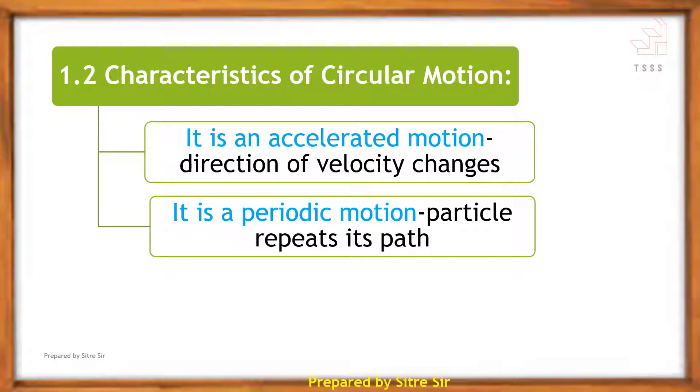Characteristics of circular motion: there are two types of characteristics. First, circular motion is accelerated motion. Second, circular motion is periodic motion.